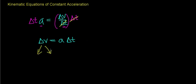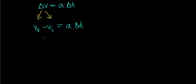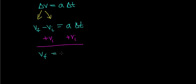We can expand the delta v term. Delta v is equivalent to the final velocity minus the initial velocity — the change in velocity equals the difference in velocities — and that equals the acceleration times the time interval over which the velocity is changing. If we want to solve for the final velocity, we add the initial velocity to both sides, giving us: v final equals v initial plus the acceleration times the change in time. Notice that the v initial on the left canceled out, which is why v initial appears on the right side.